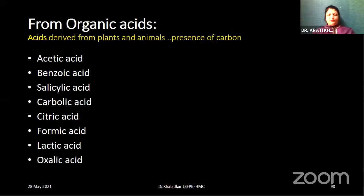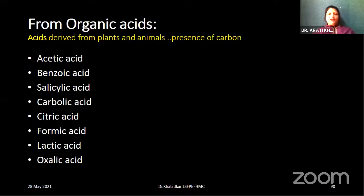Now let us go on to organic acids — derived from plants and animals. The difference between organic and inorganic: presence of carbon is very important. Examples of organic acids: acetic acid, benzoic acid, salicylic acid, carbolic acid, citric acid, formic acid, lactic acid, and oxalic acid. These can also be named as Acidum aceticum, Acidum benzoicum, Acidum salicylicum, Acidum carbolicum, and likewise.